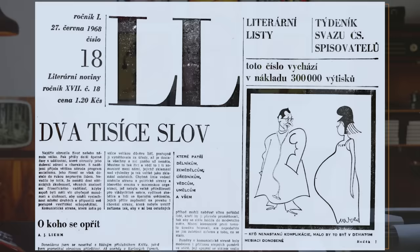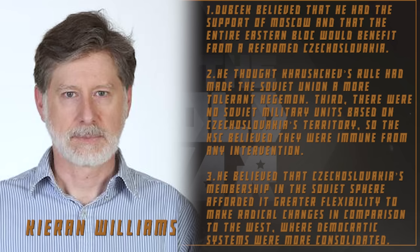Despite the Pandora's box that Dubček's Action Program had opened, he remained confident that he could keep the KSC in control of Czechoslovakia. According to Kieran Williams, there were broadly four reasons for his certainty. First, Dubček believed that he had the support of Moscow and that the entire Eastern Bloc would benefit from a reformed Czechoslovakia. Second, he thought Khrushchev's rule had made the Soviet Union a more tolerant hegemon.